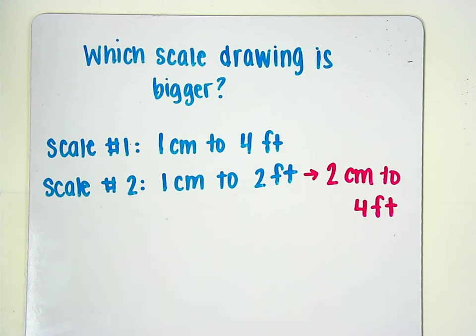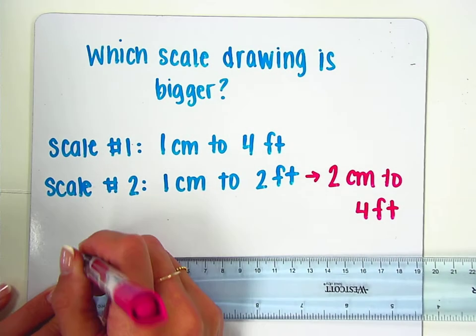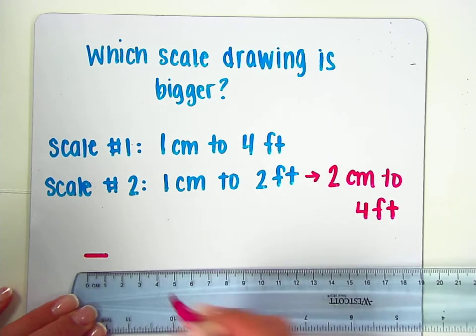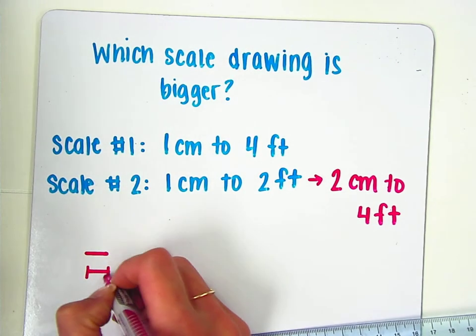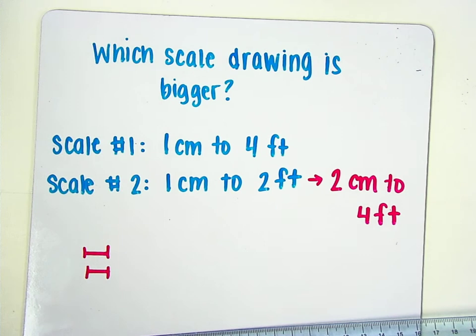If you want to visualize this a little more we can pull out a ruler and actually look at those distances. So for example here is 1 centimeter and here is 1 centimeter. So both of these are 1 centimeter distances.